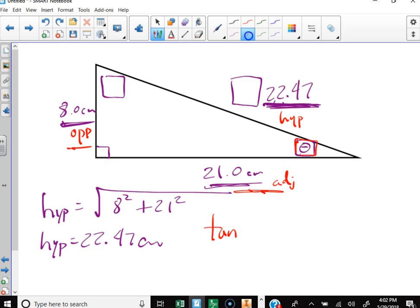So the tangent of theta, I don't know what it is, is equal to the opposite, which is 8 centimeters, divided by the adjacent, which is 21 centimeters.